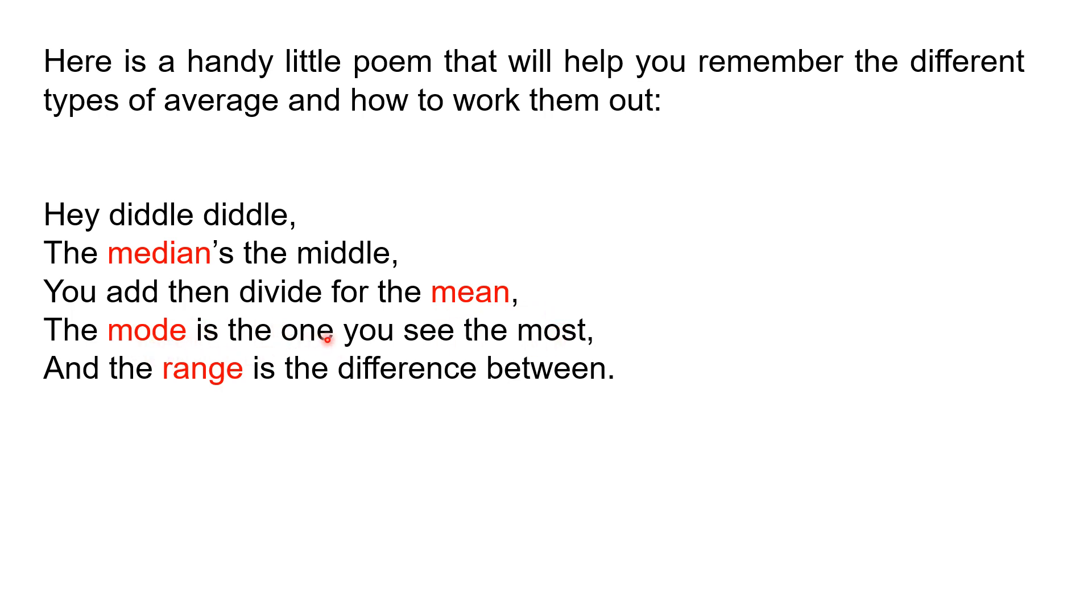The mode is the one we've been looking at in this tutorial today. It's the number you see the most in a given set of numbers. And the range, it's not a type of average. It's something else. It's really a measure of spread. It's covered in another video, but it's basically the difference between the highest and lowest numbers in a given set of numbers.